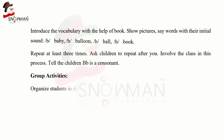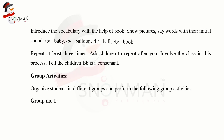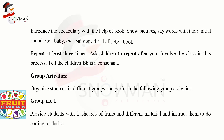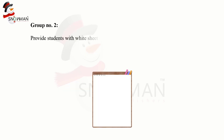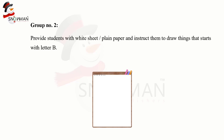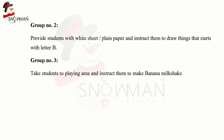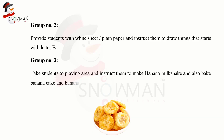Group activities: organize students into different groups. Group 1: provide students with flashcards of fruits and different materials and instruct them to sort flashcards of things that begin with the letter B. Group 2: provide students with white paper and instruct them to draw things that start with letter B. Group 3: take the students to the playing area and instruct them to make banana milkshake and also bake banana cake and banana cookies.